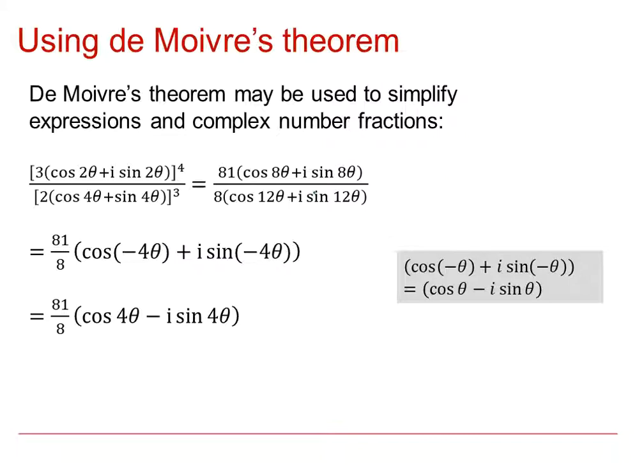So we applied the theorem to the numerator and the denominator. And then when we divided the complex numbers, we subtracted the argument. So this is 8 theta take away 12 theta.